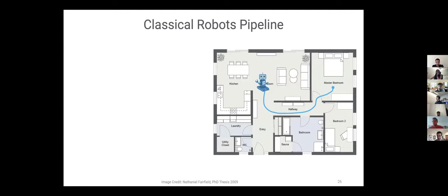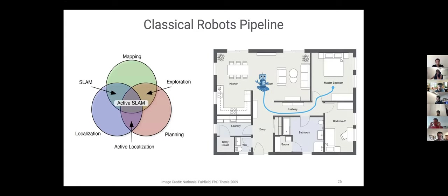If you talk to a classical roboticist, they will tell you this problem has a well understood solution structure. There are three sub-problems: a mapping problem, a localization problem, and a planning problem. Construct a partial map and plan on it, explore to the frontiers of your unknown, and then operate.